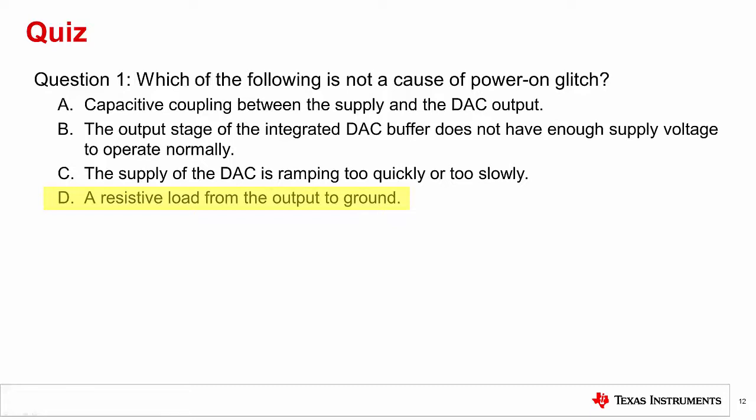Next, the ramp rate of the supply can contribute to glitch because of the other causes described in A and B. If the glitch ramps very quickly, the capacitive element will induce a larger voltage glitch. If the supply ramps too slowly, the output stage could be in an uncontrolled state for a longer period resulting in greater glitch energy.